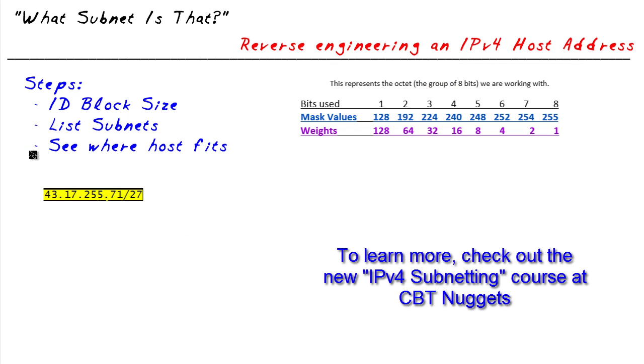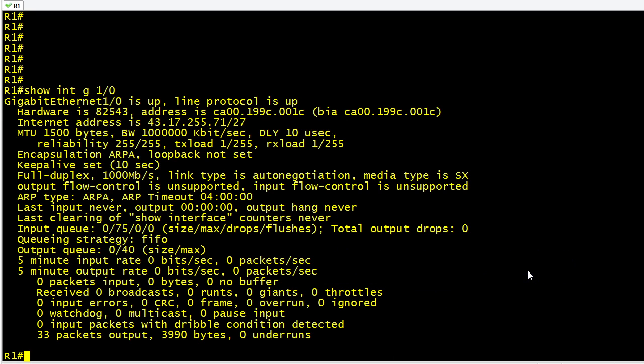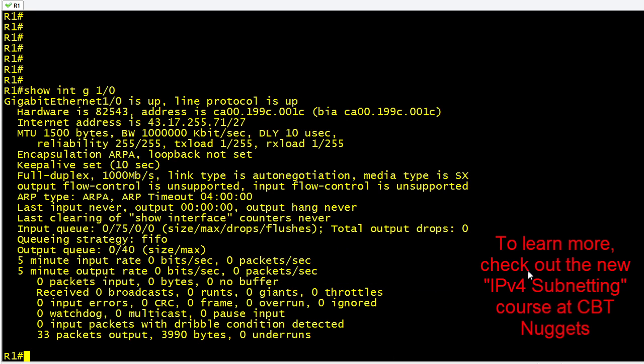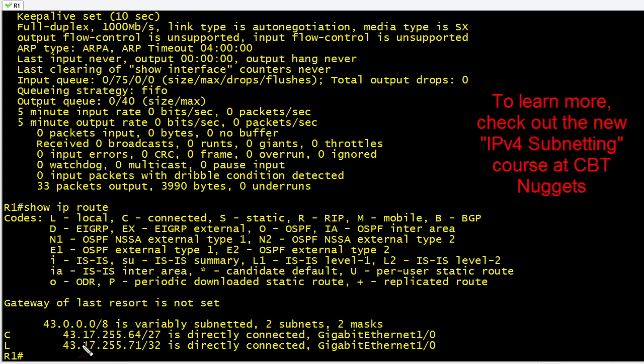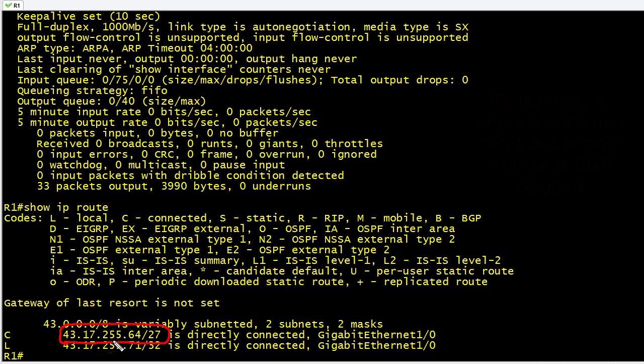Now truth be told, there is one other method that we could use to determine what subnet that is if we're looking at a Cisco router, and that's because this router is directly connected to that network. If we did a show IP route like that, that would be yet another way to confirm that sure enough, that really is the 43.17.255.64 subnet that it's directly connected to.